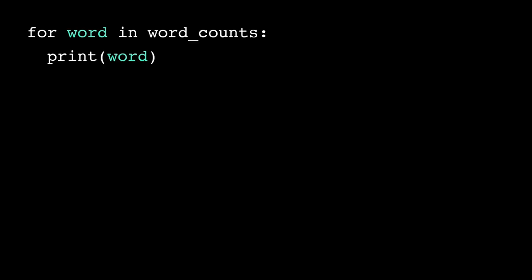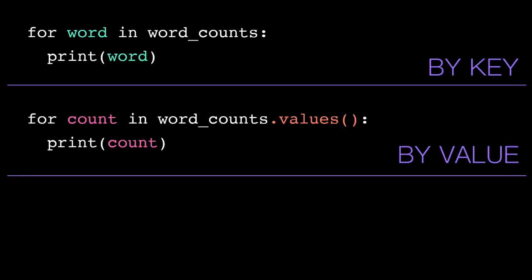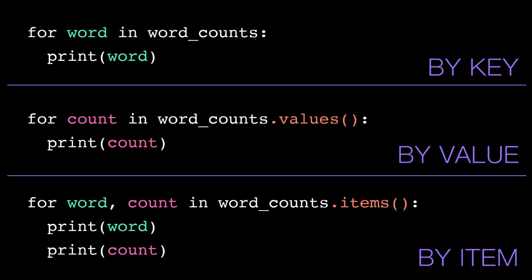This means we can iterate over a dictionary in three ways. By key, by value, and by item, or key and value. We can achieve all of the same things just by iterating by key. But these alternate syntaxes help make our code a bit cleaner, depending on what we're trying to do.